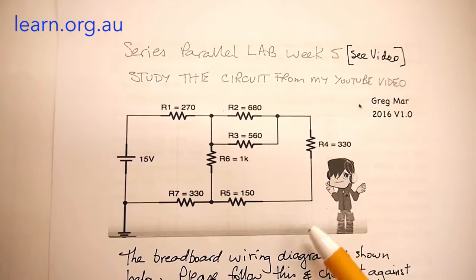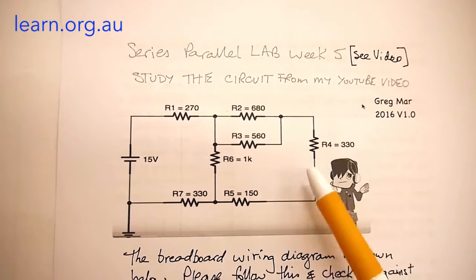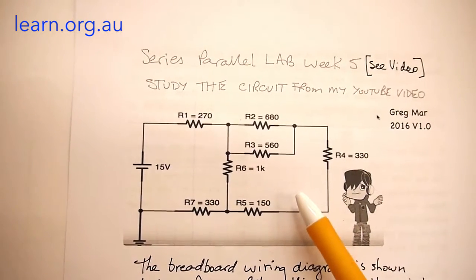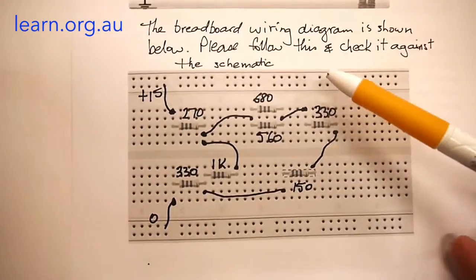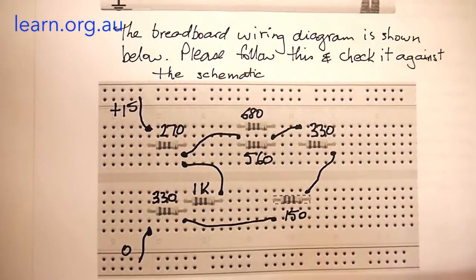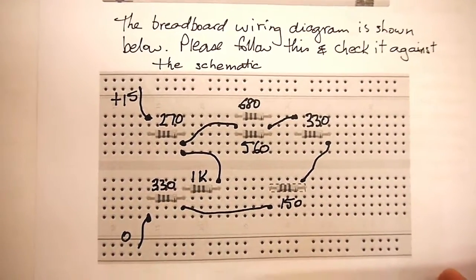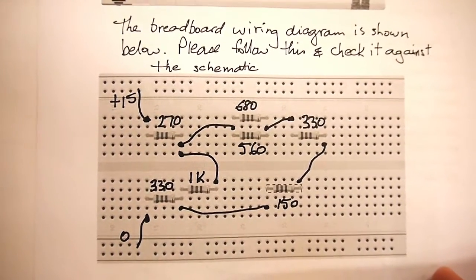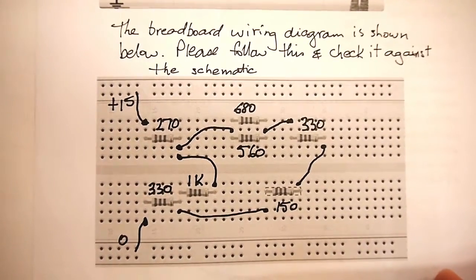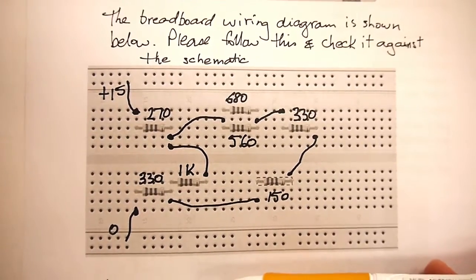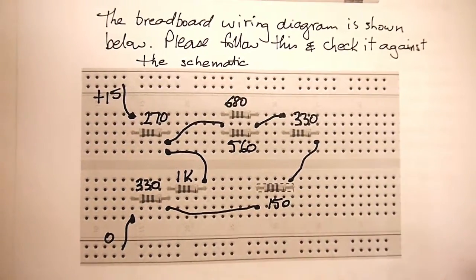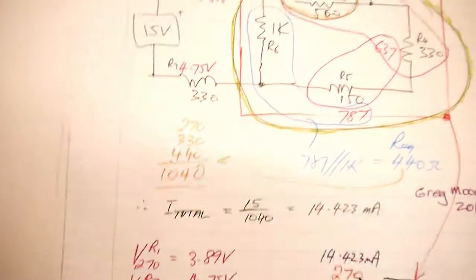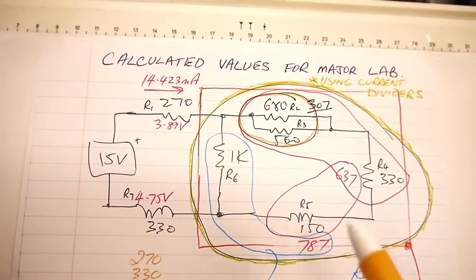You can see that we've got several current paths happening in the circuit. The breadboard layout was given so that everybody wired up the circuit the same on their breadboard. All that is left now is to go ahead and look at the calculations for those various current paths.